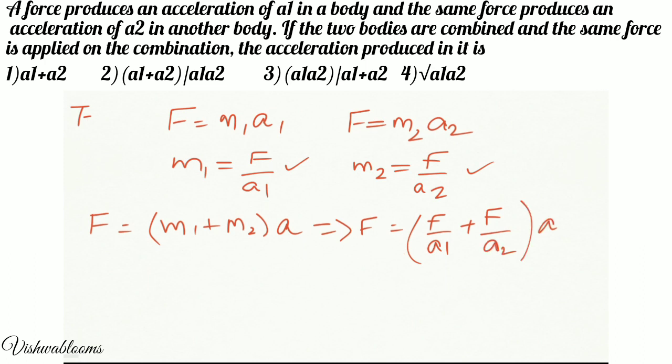Now, I want A, right? So I will take out F as common. F is equal to F into 1 by A1 plus 1 by A2 into A. Now, both F's will get cancelled and I am going to send this term 1 by A1 plus 1 by A2 to the left side after taking out the LCM.